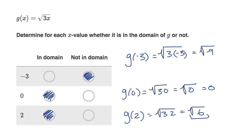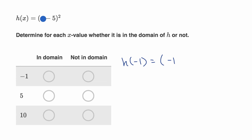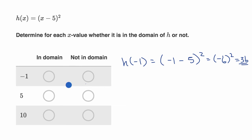Let's do one last example. We're told this is h of x, and we have to figure out whether these x values are in the domain or not. Let's think about h of negative one. Every place we see an x we replace it with negative one, so we get negative one minus five, squared. This is equal to negative six squared, which equals positive 36 — a very legitimate output. So x equals negative one is definitely in the domain.